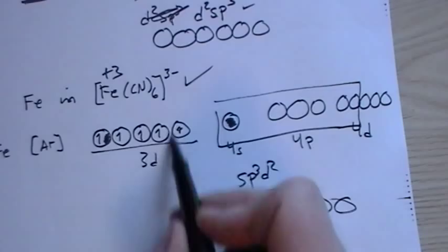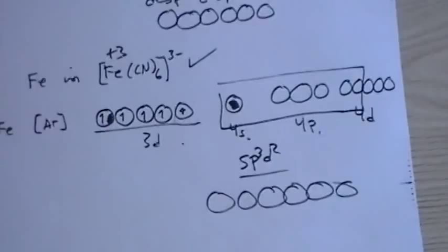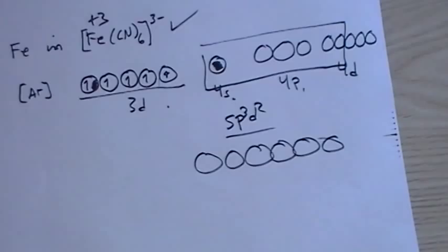So if this one was missing, we would have started here. This would have been dsp3d. So they can get a little wild looking, but just follow that procedure. Write out the orbital diagram, remove the electrons starting with the 4s. The guys that I give you,